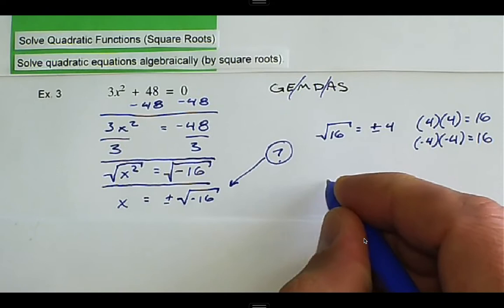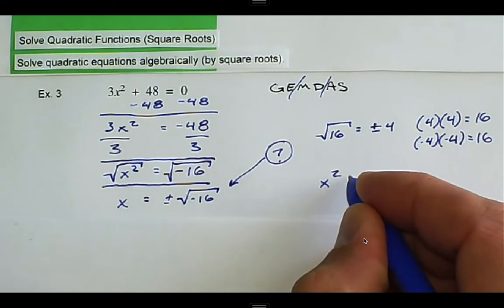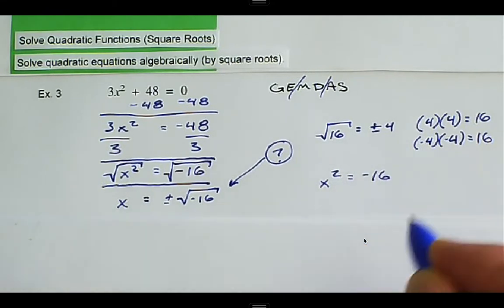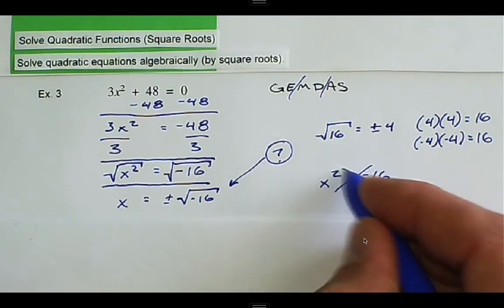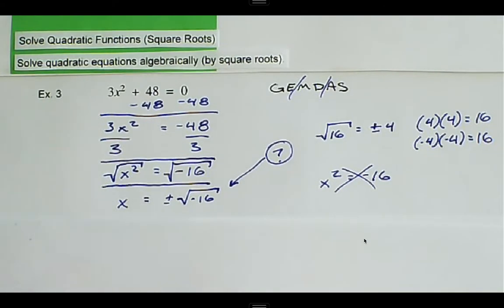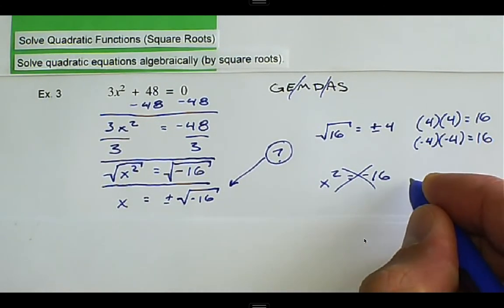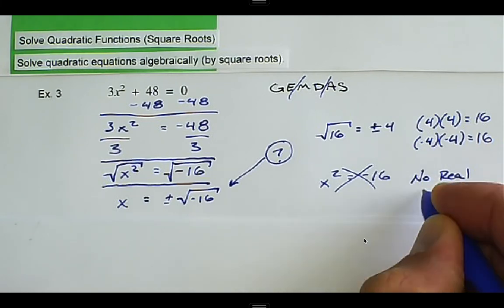But there's no combination of the same number multiplied together that will give us a negative. So in this case, there is no real solution.